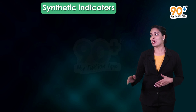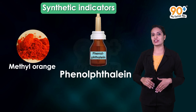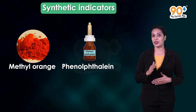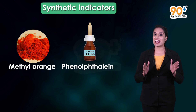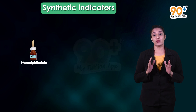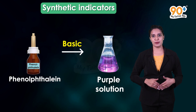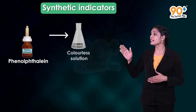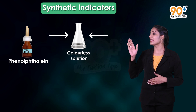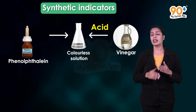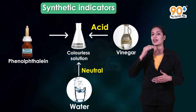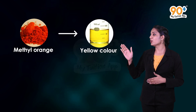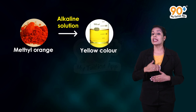Now let's look at another class of indicators — synthetic indicators. Methyl orange and phenolphthalein are used as synthetic indicators and show particular color changes with acids and bases. Phenolphthalein turns purple if it meets something basic such as ammonia, and stays colorless if it meets an acid like vinegar or a neutral substance like water.